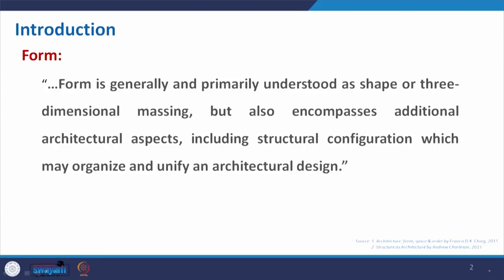We all agree that in order to give the form of architecture, structure is indispensable — it is very much needed. Without structural stability and structural support, we cannot create the form the way we want, which may organize and unify architectural design. So form is a three-dimensional object with some architectural aspect, space to live in, and supported with structural configuration — all together creating and unifying an architectural design.